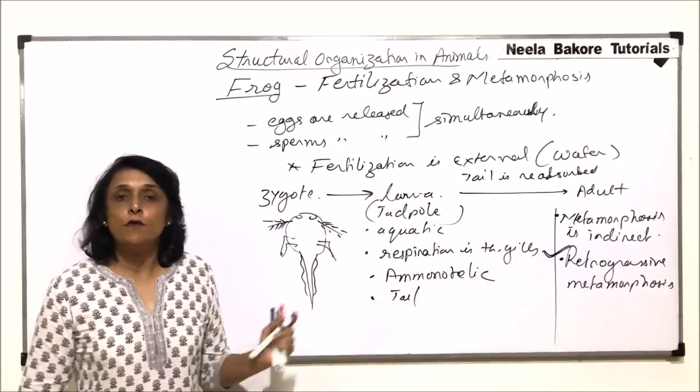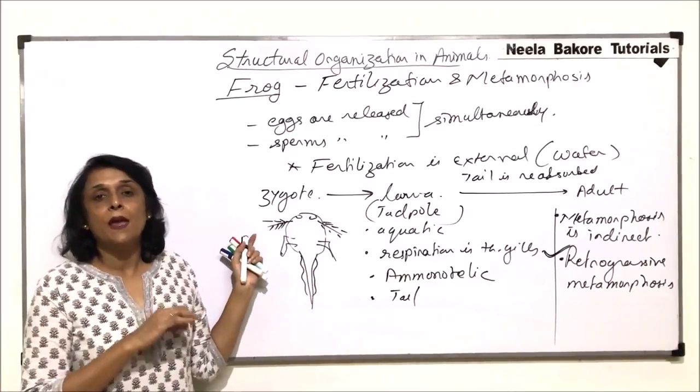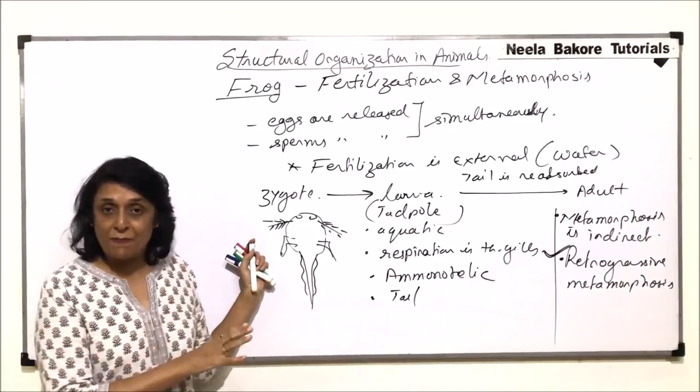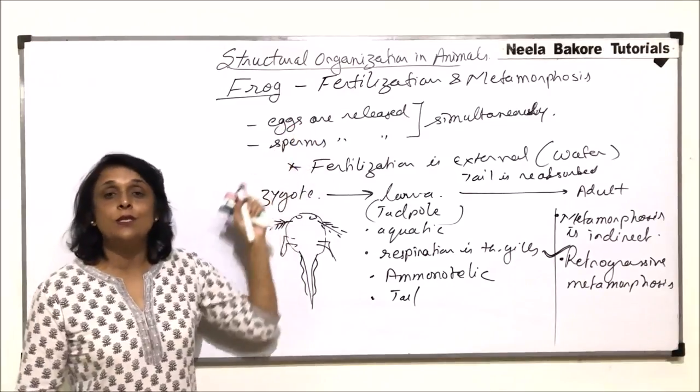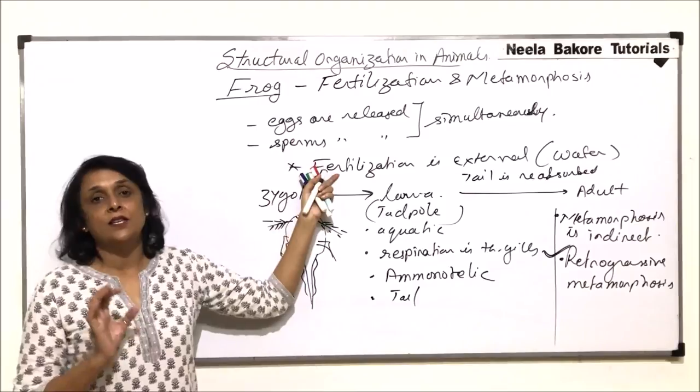So in case of frogs, fertilization is external, though males and females release or produce the gametes separately. Release of the gametes, that is eggs and sperms, takes place simultaneously so that fertilization is possible.